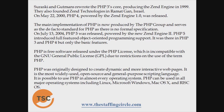On May 22, 2000, PHP 4, powered by the Zend Engine 1.0, was released. The main implementation of PHP is now produced by the PHP Group and serves as the de facto standard for PHP, as there is no formal specification. On July 13, 2004, PHP 5 was released, powered by the new Zend Engine 2. PHP 5 introduced full-featured object-oriented programming support, whereas PHP 3 and PHP 4 had only basic OOP features.